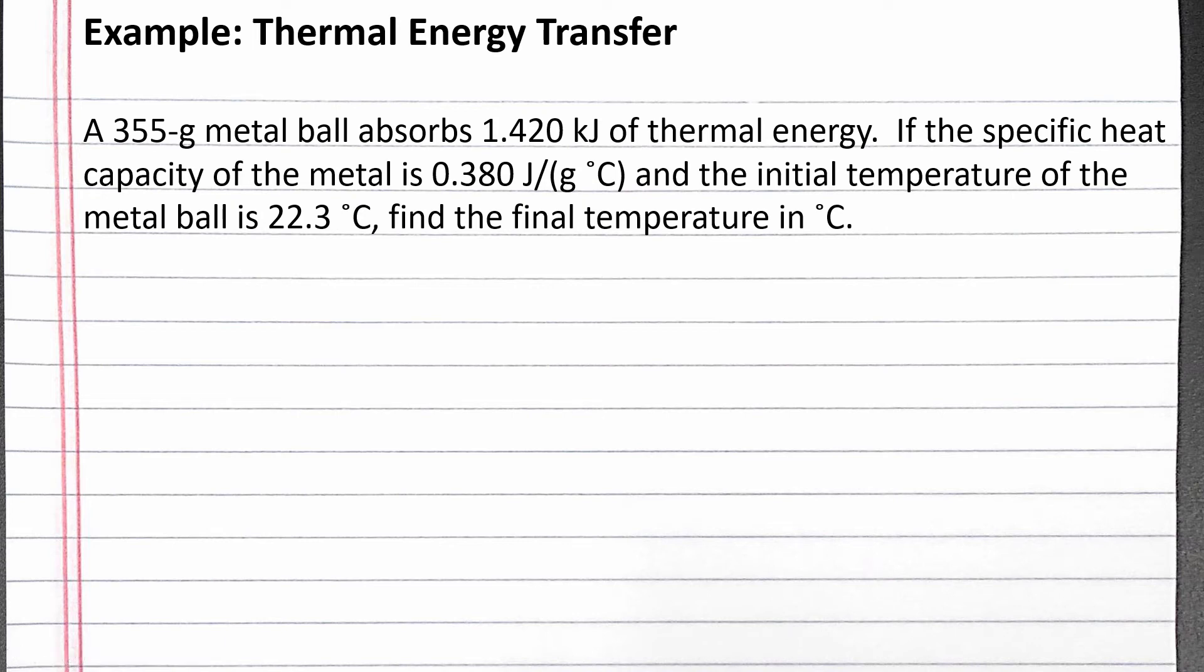In this example, we find the final temperature of an object after it absorbs thermal energy. Our problem reads: a 355 gram metal ball absorbs 1.420 kilojoules of thermal energy. If the specific heat capacity of the metal is 0.380 joules per gram degrees Celsius, and the initial temperature of the metal ball is 22.3 degrees Celsius, find the final temperature in degrees Celsius.